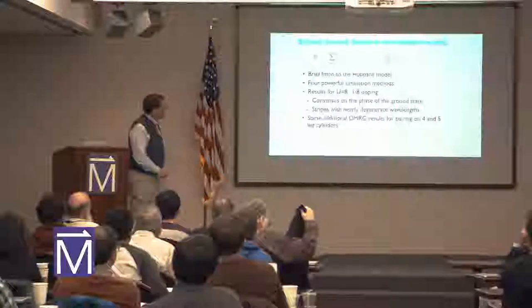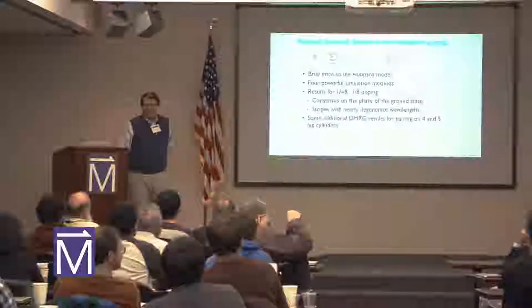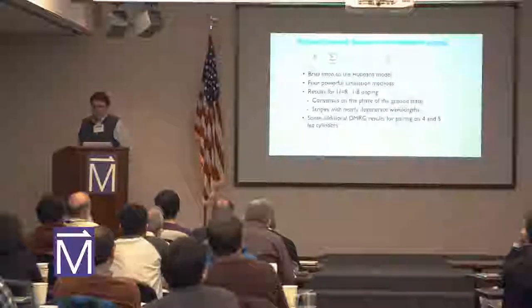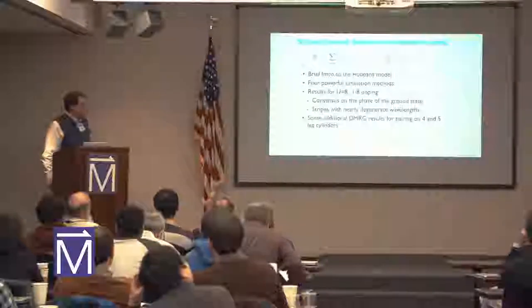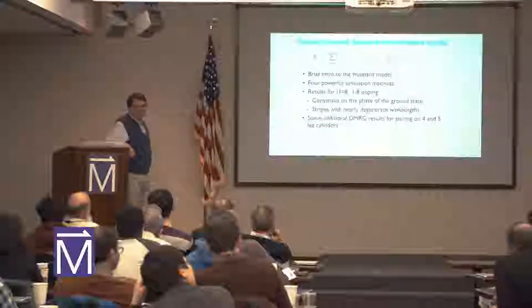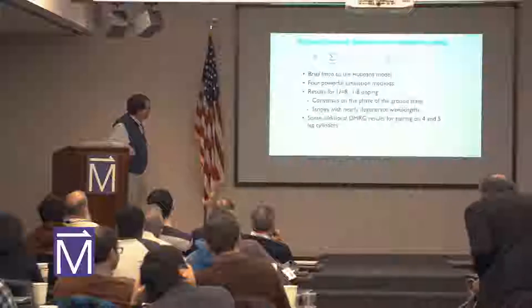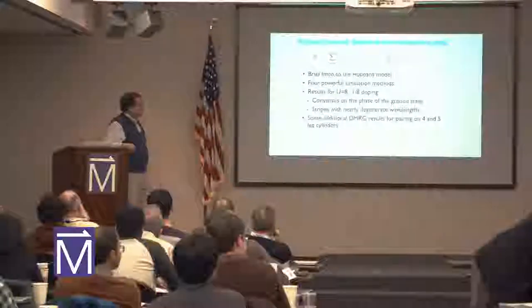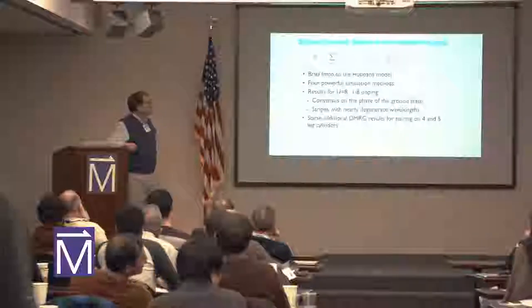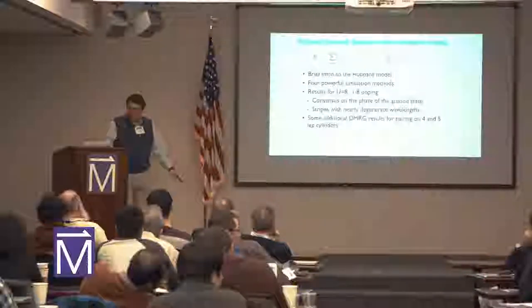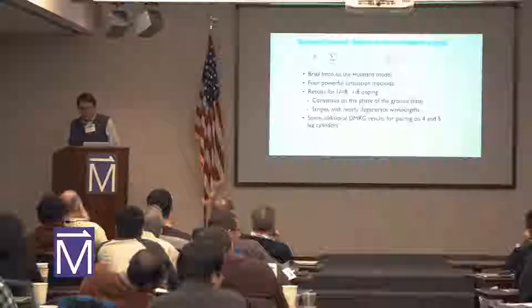I want to talk about a set of numerical calculations with a number of methods for the Hubbard model. Mostly we find striped ground states in the Hubbard model. We're considering just nearest-neighbor hopping T, and not a very broad range of parameters.